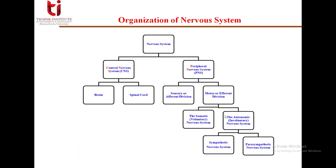Now let's have a brief recap on the divisions or organization of the nervous system. The nervous system is classified into two: the central nervous system and the peripheral nervous system. The central nervous system further constitutes the brain and the spinal cord. The peripheral nervous system has two further divisions: the sensory division and the motor division.